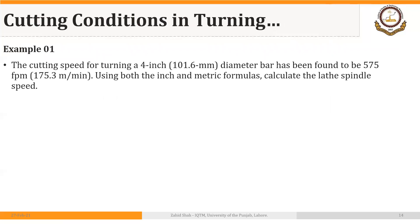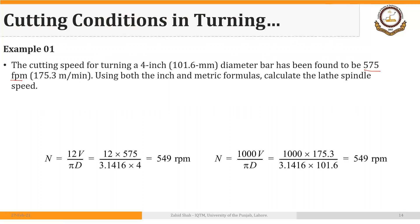For example, the cutting speed for turning a 4-inch diameter bar has been found to be 575 feet per minute, or 175.3 meters per minute, using one of the tables from the previous session. Using both the inch and metric formulas, calculate the lathe spindle speed. The RPM formula is 12V over π D for the inch system.